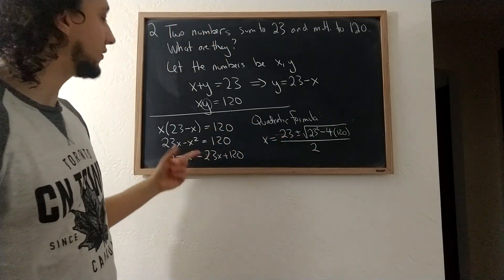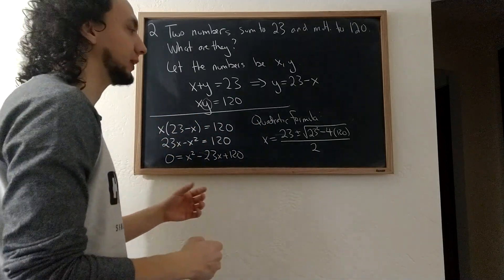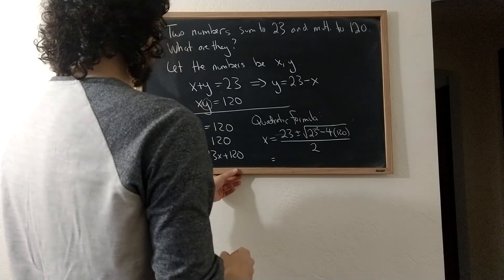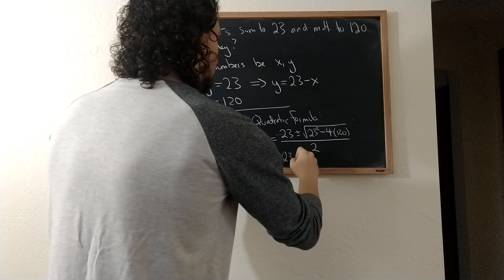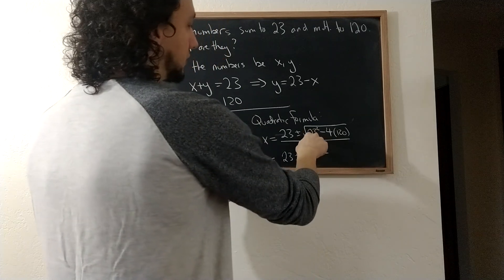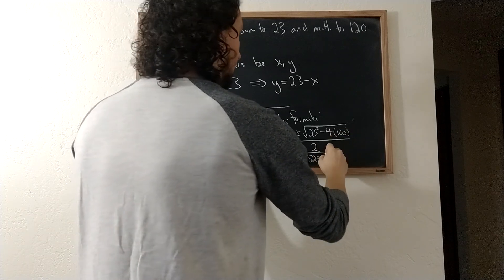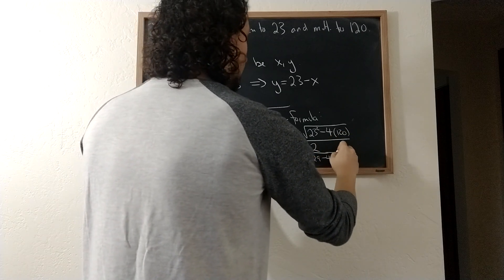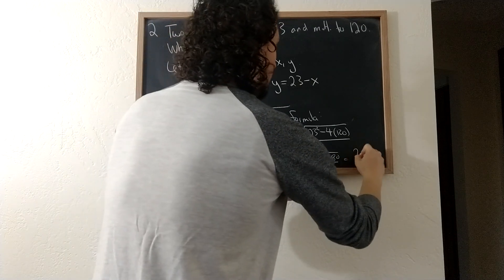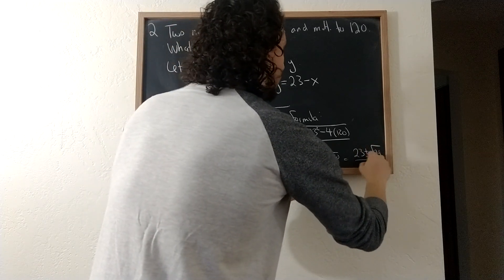This is just applying the quadratic formula, which, like I said, if you want to refresh your memory on that, I have another video about the quadratic formula. And this is equal to 23 plus or minus the square root of, 23 squared is going to be 529, and 4 times 120 is going to be 480, all divided by 2. And this is 23 plus or minus the square root of 49 divided by 2.